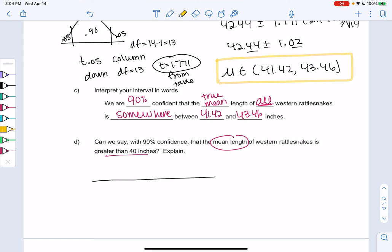41.42 to 43.46. So we're confident that the average is any of these values in between. We don't know the exact average, but we're confident that it's in between these values. So is this interval greater than 40?